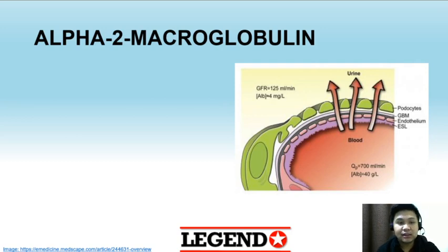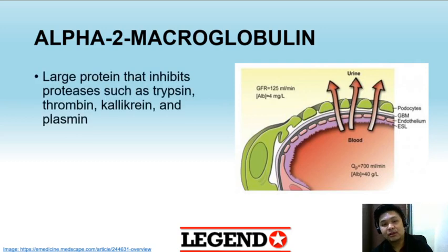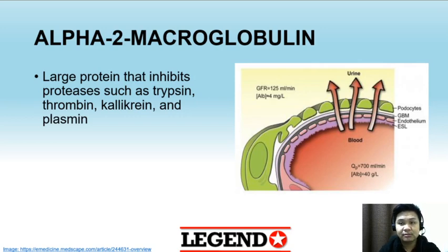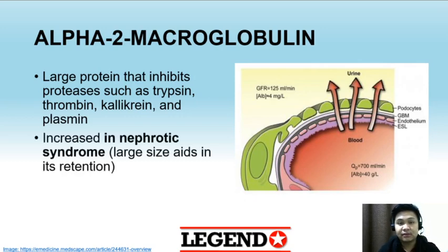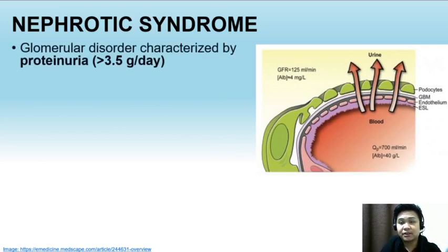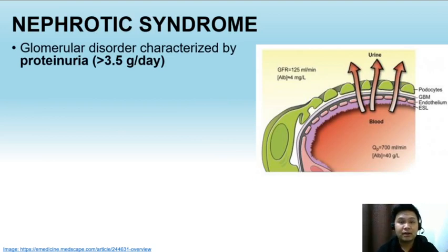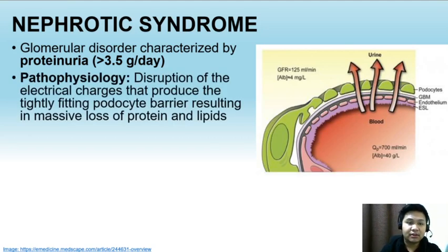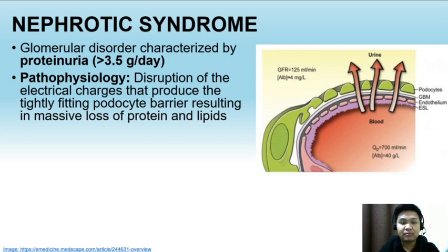The next serum protein is alpha-2-macroglobulin. It is a large protein that functions to inhibit proteases such as trypsin, thrombin, kallikrein, and plasmin. We measure alpha-2-macroglobulin in diagnosing nephrotic syndrome, where it is relatively increased. Nephrotic syndrome is a manifestation of glomerular disorders characterized by proteinuria of more than 3.5 grams per day. The pathophysiology involves disruption of the electrical charges that maintain the podocyte barrier in the glomerulus, resulting in massive loss of protein and lipids.